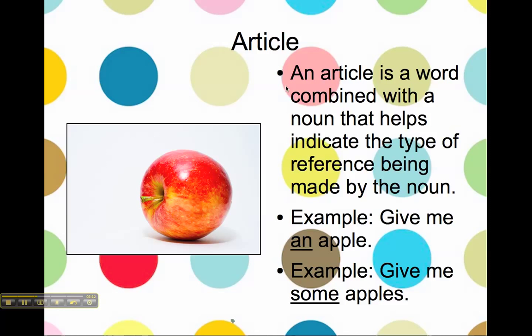An article is a word combined with a noun that helps indicate the type of reference being made by the noun. For example, we have the sentence: give me an apple. 'An' is the article signifying that it's a singular apple. In the next sentence, we have: give me some apples. 'Some' becomes the article signifying multiple apples.